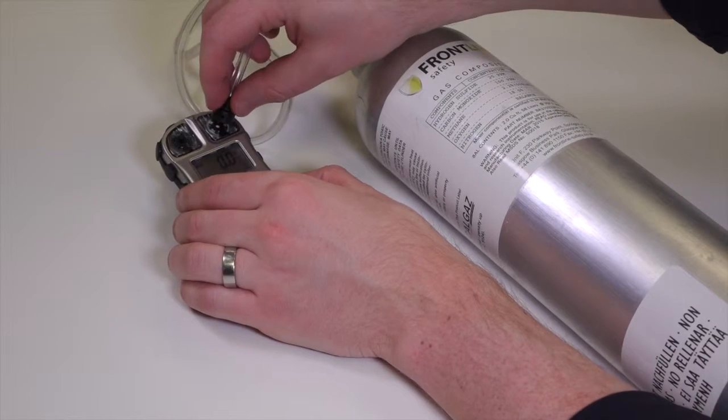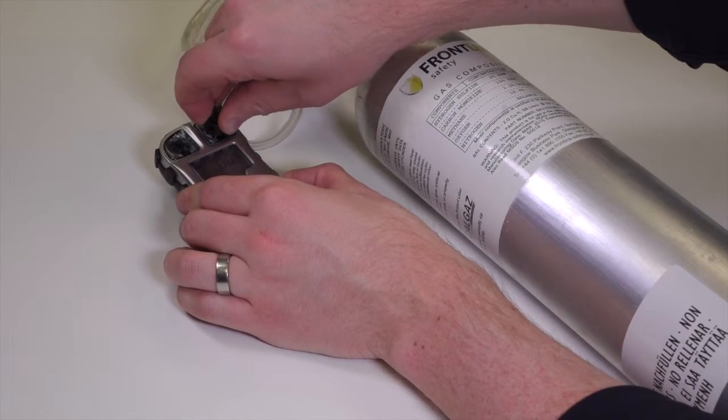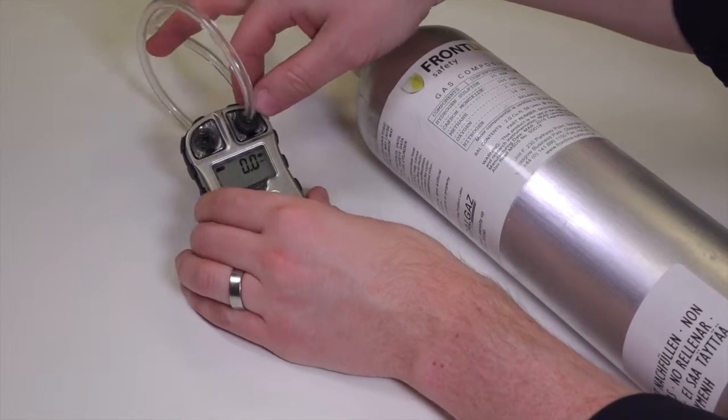What we'll do is just attach the calibration adapter to the unit. The sensors on the right hand side, just note that it's the buzzer or the alarm that's on the left.